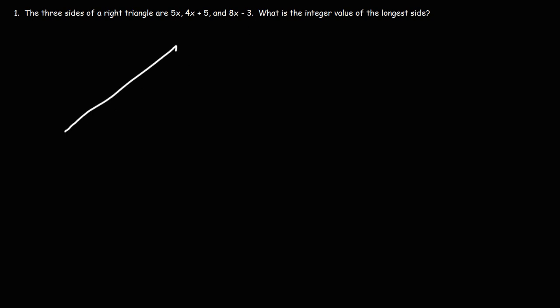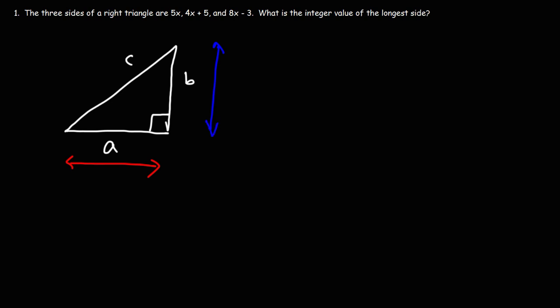The Pythagorean Theorem helps us to see the relationship of the three sides of a right triangle. Let's call them A, B, and C. A represents the length of one side of the triangle, B represents the length of the vertical side, and C represents the length of the hypotenuse. The hypotenuse is the longest side of the triangle — it's across the right angle, which is represented by a box indicating a 90-degree angle.